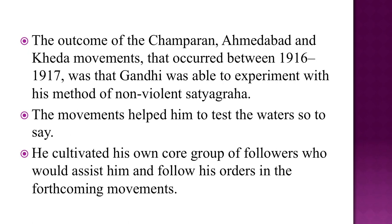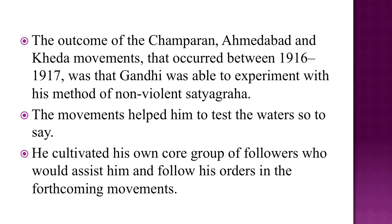The outcome of the Champaran, Ahmedabad, and Kheda movements — that occurred between 1916 and 1917 — was that Gandhi was able to experiment with his method of non-violent Satyagraha. The movements helped him test the waters and he cultivated his own core group of workers who would assist him in forthcoming movements. In these movements, Gandhiji showed his special talent for reconciling apparently opposed interests — for example, mill owners and workers — keeping his friendship with one and at the same time gaining the trust of the other.